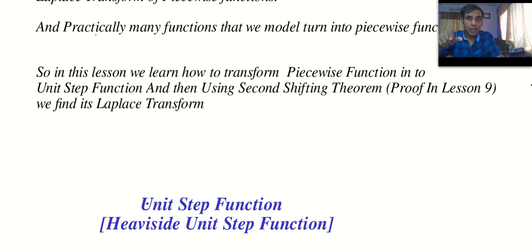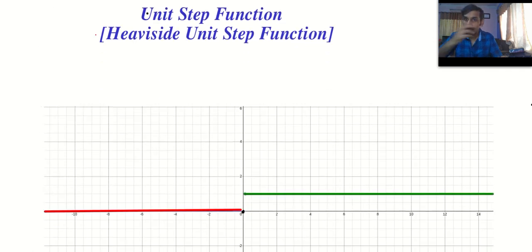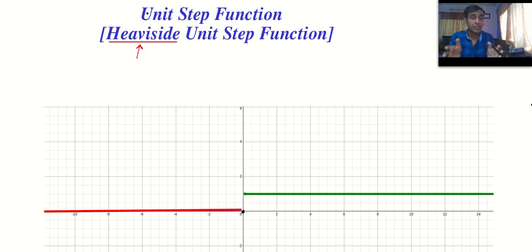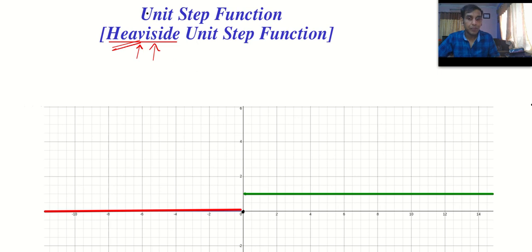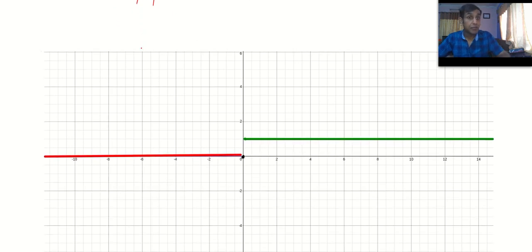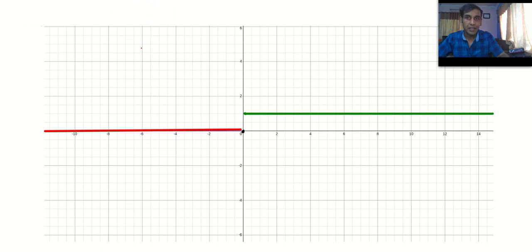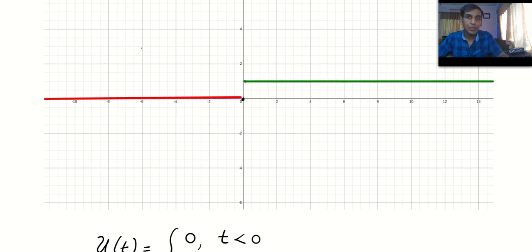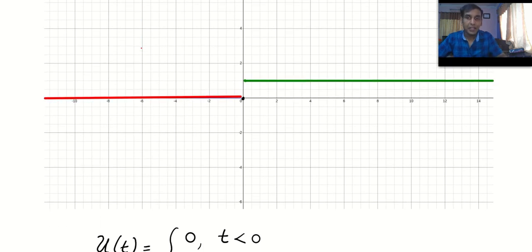The proof is in lesson number 9. This is the unit step function, also called the Heaviside unit step function. You can read about Oliver Heaviside — he's an amazing physicist and mathematician, a self-learned mathematician who contributed so many things to mathematics. You can search in Google and learn a lot about this great mathematician.